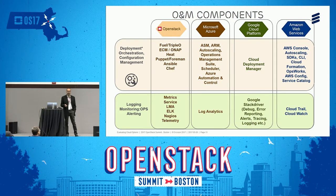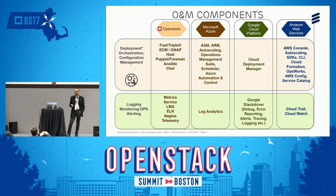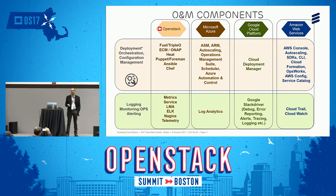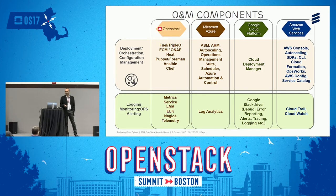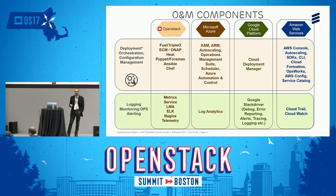For orchestration, there are various platforms — Ericsson has the Ericsson Cloud Manager, which can deploy virtual applications on top of any underlying OpenStack platform. There's also ONAP (Open Network Automation Platform) based on OpenECOM for telecom network orchestration. These tools use the Heat API to orchestrate VM onboarding. Configuration management can be handled with tools like Puppet, Foreman, Ansible, or Chef.